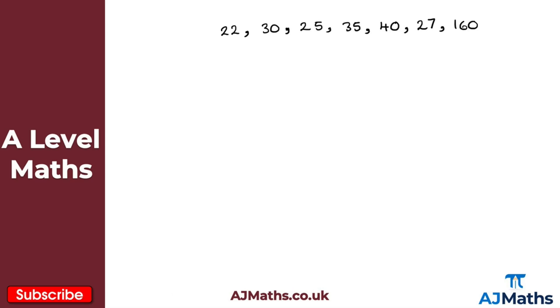Now on inspection, this value here of 160 straight away should kind of set alarm bells off. Everyone else here falls between 20 and 40 years old and then we've got this one value here of 160. So in that case, this 160 here would be an outlier. It's an extreme value.